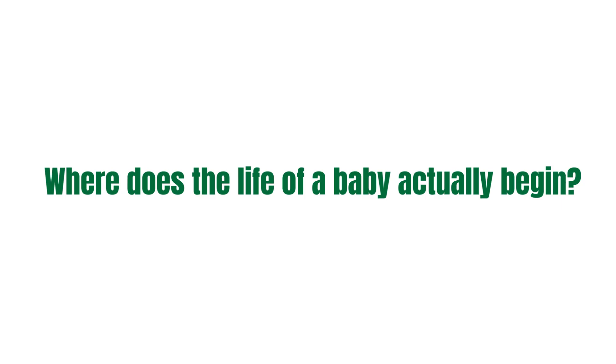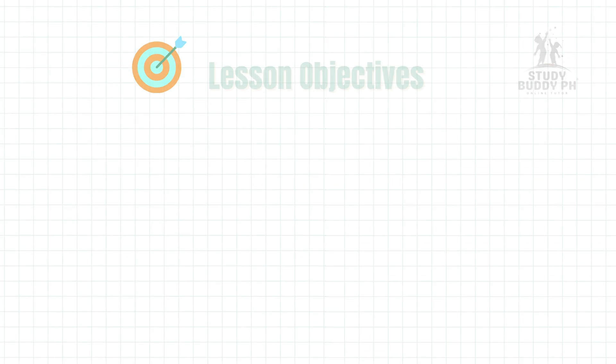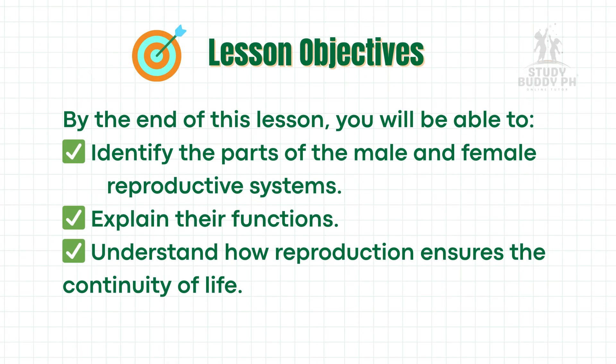We'll find out how human life starts and what body systems make this possible. By the end of this lesson, you will be able to identify the parts of the male and female reproductive systems, explain their functions, and understand how reproduction ensures the continuity of life.